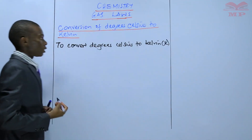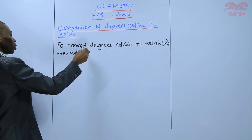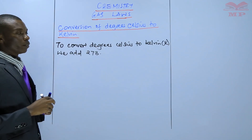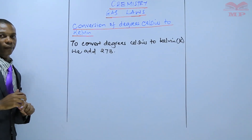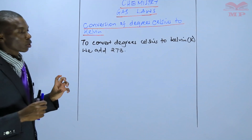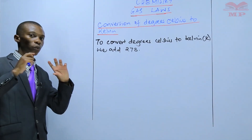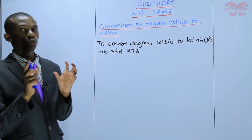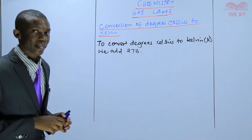To convert degree Celsius to Kelvin, we add 273. So anytime you are given a temperature in degree Celsius and you want to convert it to Kelvin, you just need to add 273 to that degree Celsius value, and you will get the temperature in Kelvin.